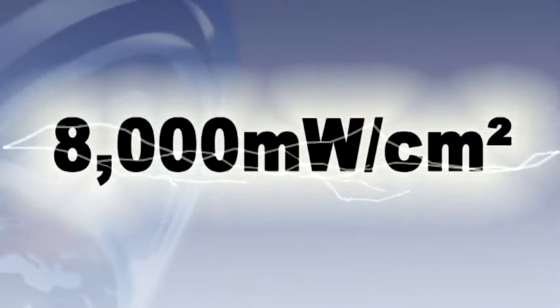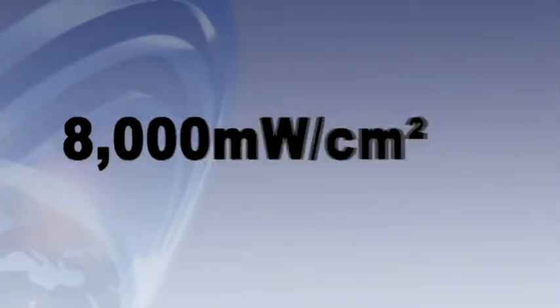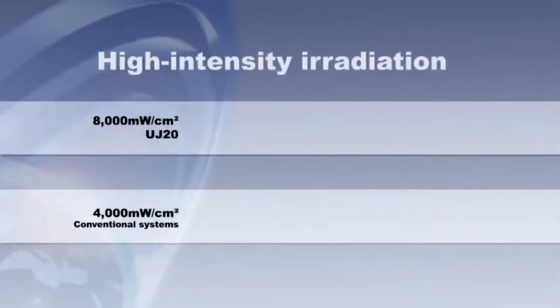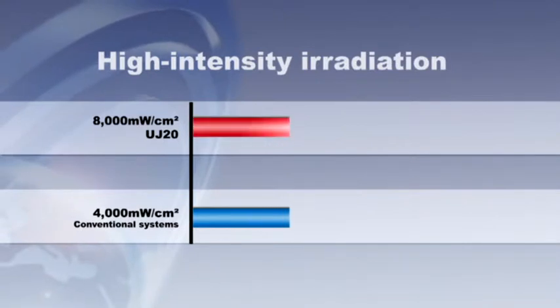With an irradiation intensity output of up to 8000 milliwatt per centimeter square, iCure UJ20 is a true powerhouse. Irradiation times can be as brief as a few seconds, which makes higher pulse frequencies possible.